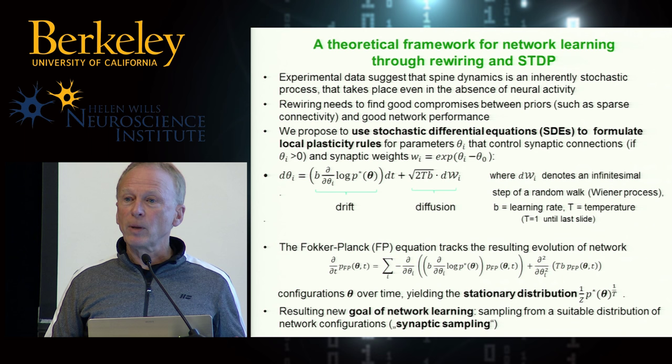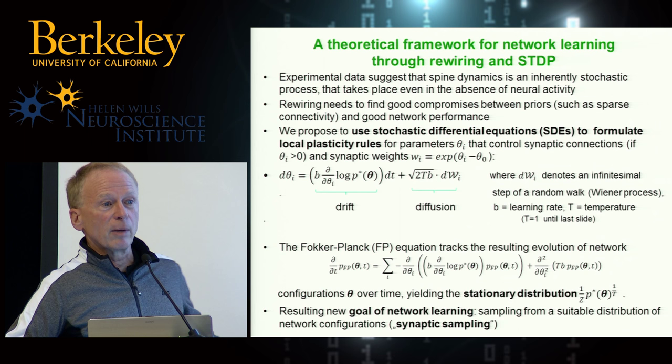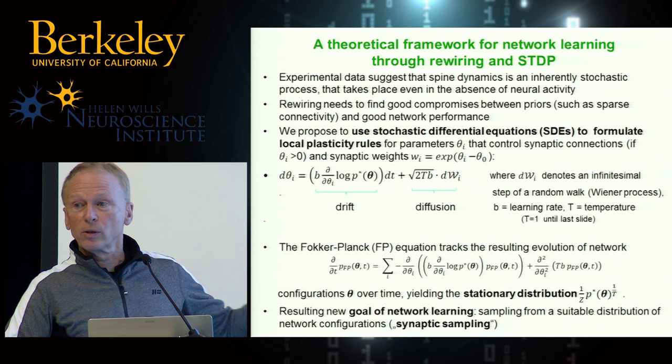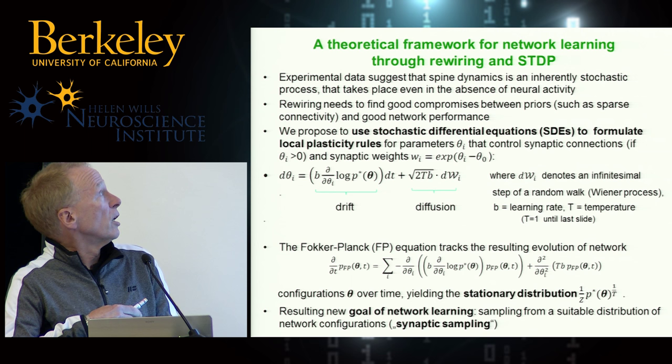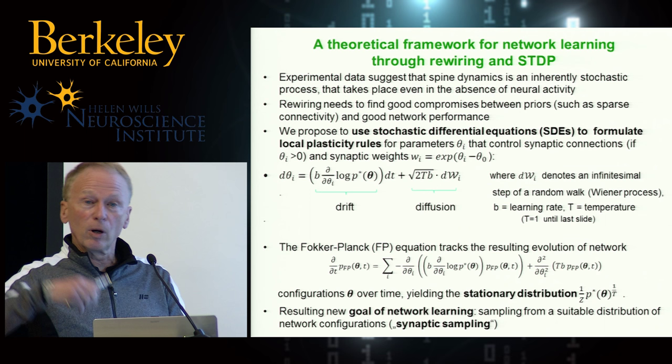You may even change p* at some point, or something changes in the network. It will still follow the same rule, always trying to track what the current p* is. We coined the term synaptic sampling for this because these are parameters that regulate one synaptic weight plus its connectivity — as opposed to neural sampling, which involves stochasticity at the level of activity with fixed θ.